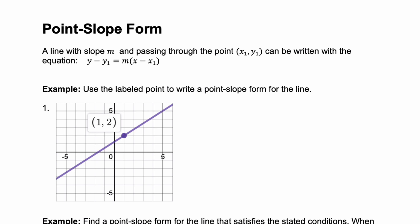Point-slope form is just another way that you can write the equation of a line. Point-slope form is a line with slope m, and it passes through a point x1, y1. You use the equation y minus y1 equals m times x minus x1.